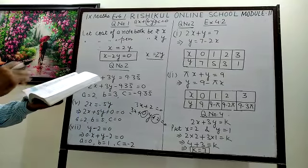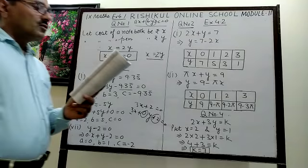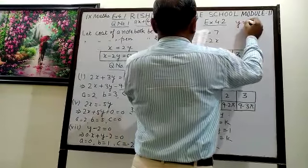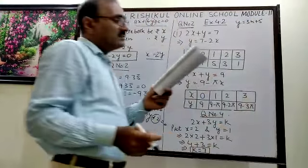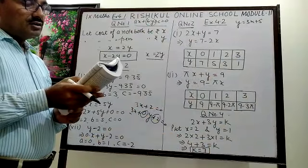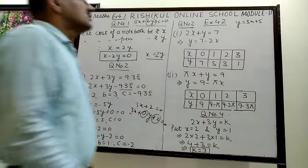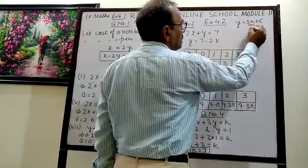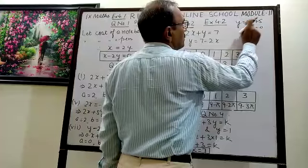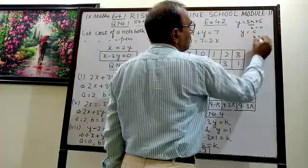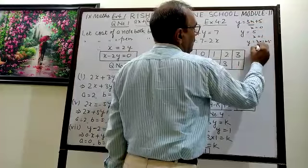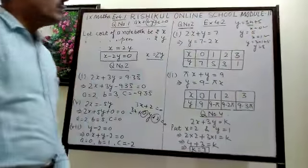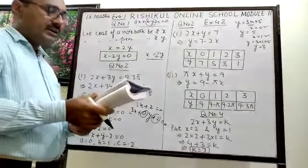Now the next exercise is 4.2. Question 1: which of the following options is true — does y equals 3x plus 5 have a unique solution, only two solutions, or infinitely many solutions? Students, if you put different values of x, you get different values of y. For example, putting x equals 0 gives y equals 5, and putting x equals 1 gives y equals 3 plus 5 equals 8. So this equation has infinitely many solutions.